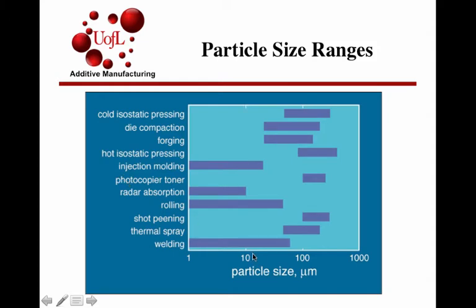For laser powder bed processes, for instance, a median particle size of about 30 microns and a distribution that is narrow with a width of plus or minus 15 microns is typically used for a lot of laser powder bed methods.